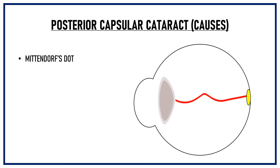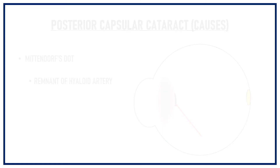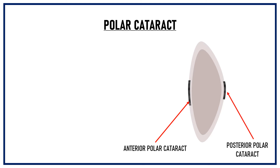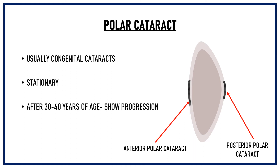Posterior capsular cataract may occur in association with Mittendorf's dot. Mittendorf's dot is a remnant of the hyaloid artery that provides nourishment to the lens during embryological development and regresses by birth. When there is localized cataract formation at the center of the lens capsule, it is known as a polar cataract. Polar cataract again can be an anterior polar cataract or a posterior polar cataract. These are usually congenital cataracts and are stationary, though after the age of 30 to 40 years, some polar cataracts do show progression.